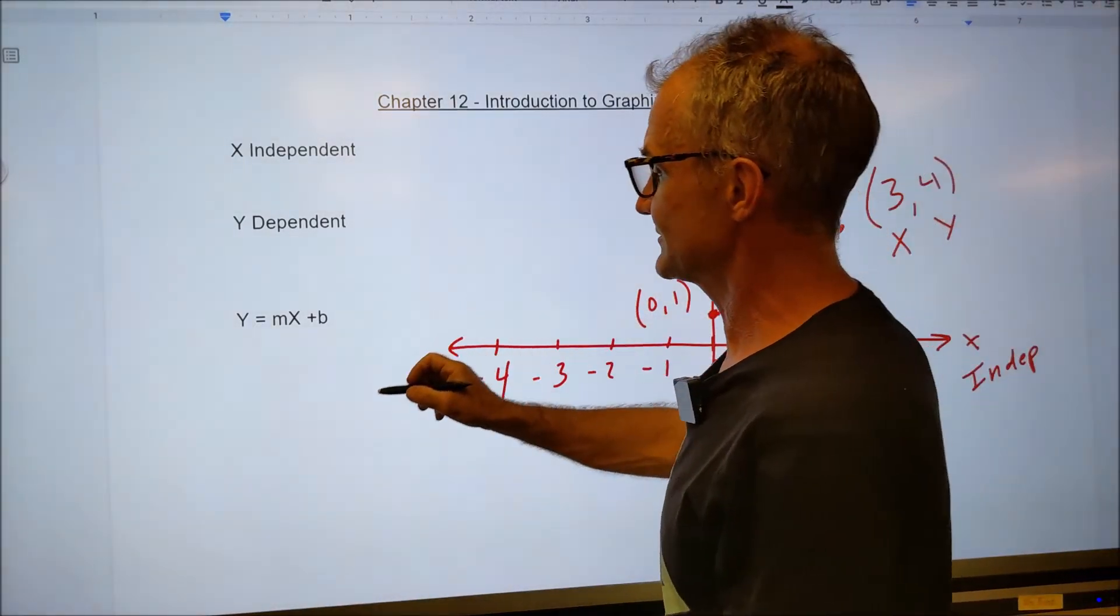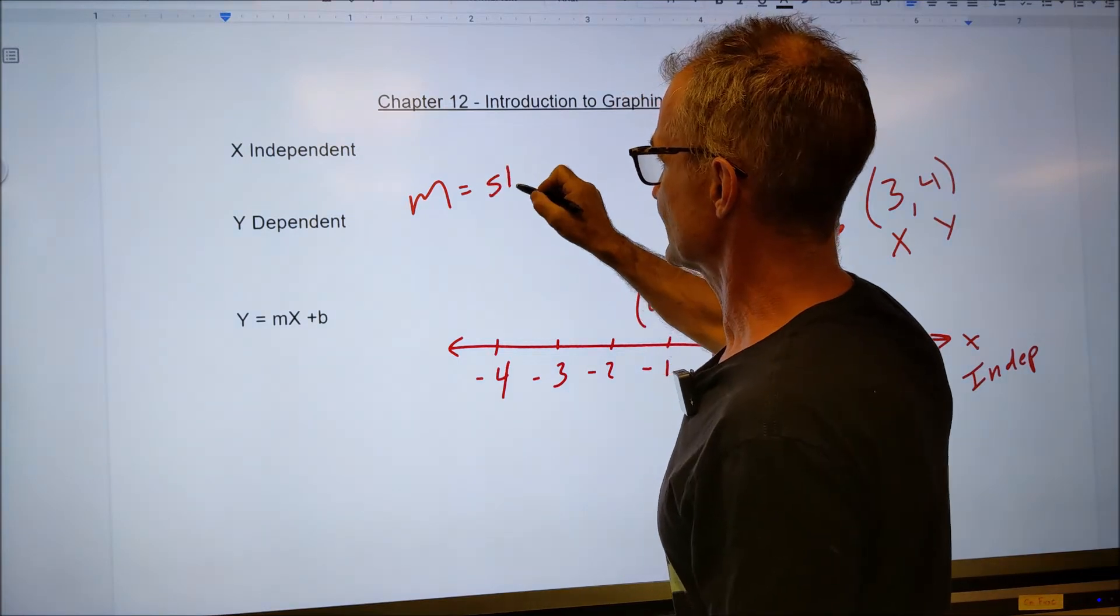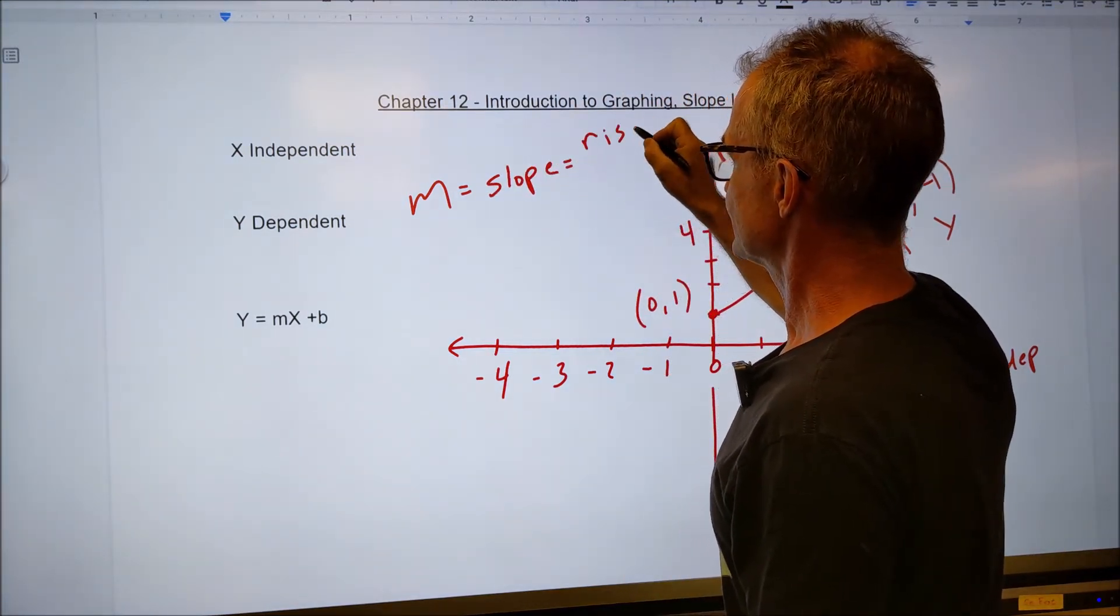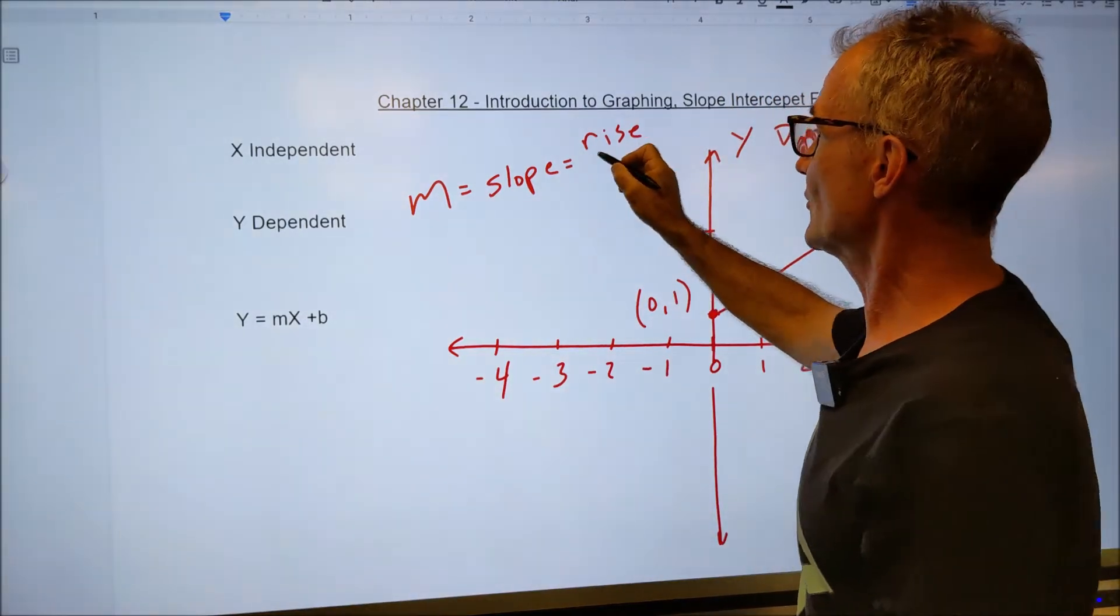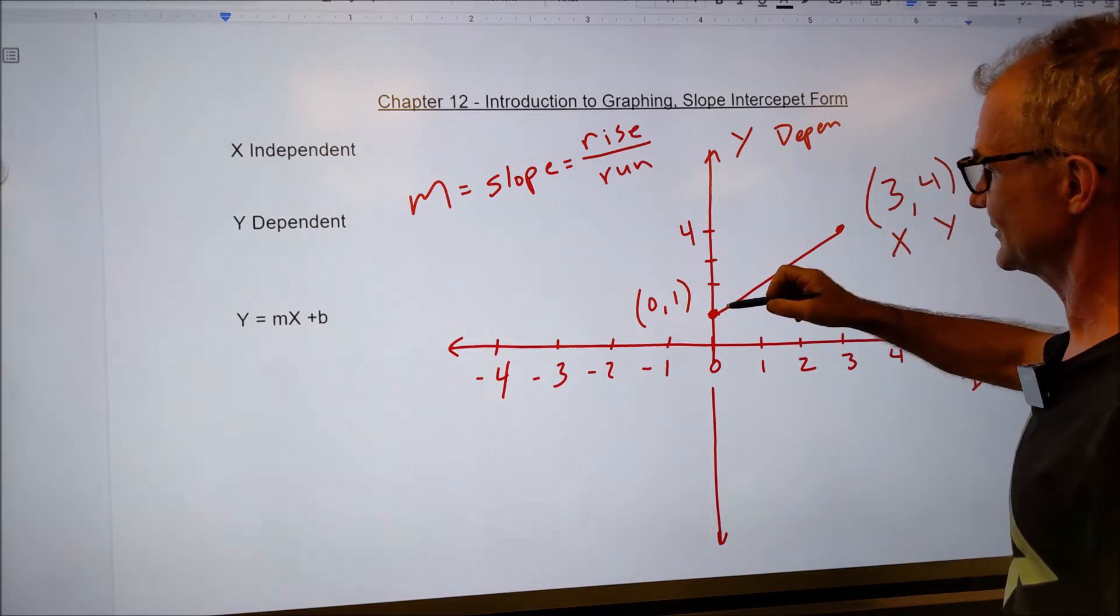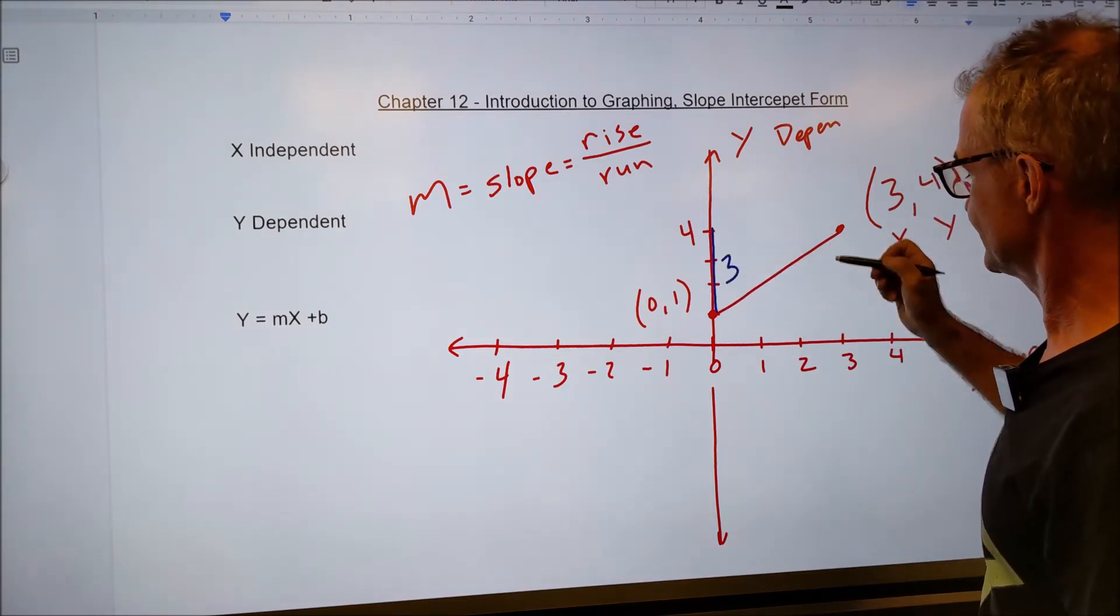It is the slope of the line. It is defined as the rise, the change in y over the run, the change in x. So let's see if we can figure this out from this point to this point. I rise one, two, three. So my rise is three.